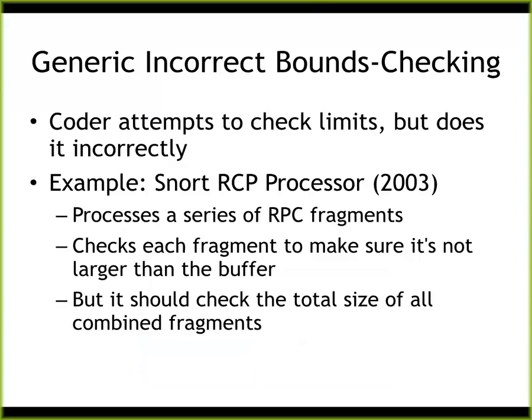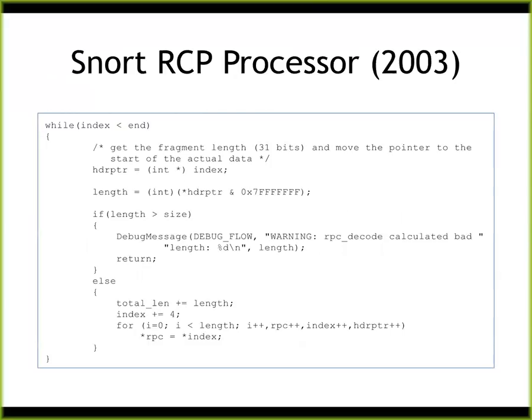Incorrect bound checking happens a lot — you do check that something isn't too big, but make some kind of mistake so the check doesn't correctly prevent overflow. Snort had one where it checked each network packet fragment to ensure it wasn't too large, but it was assembling all the fragments together and the total could be too large. This is the same as the ping of death that affected Windows 95: you could send a series of packets adding up to more than 64K, crashing the server. Each packet wasn't too big, but they reassembled into a buffer that wasn't big enough.